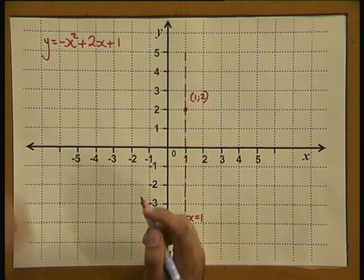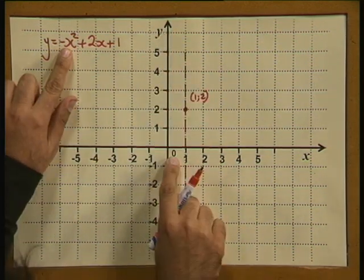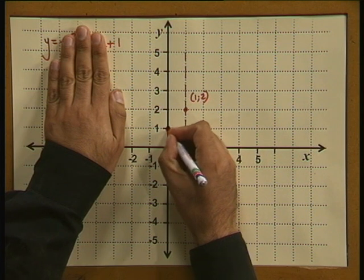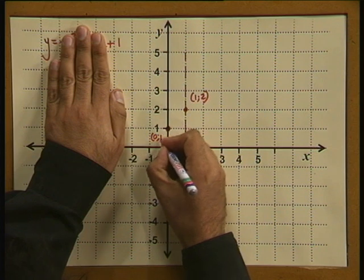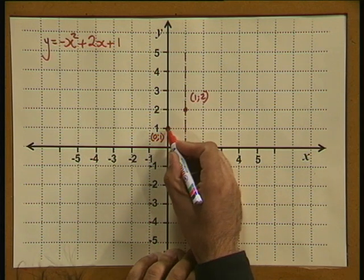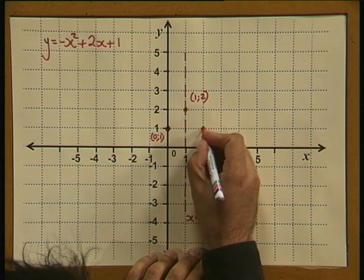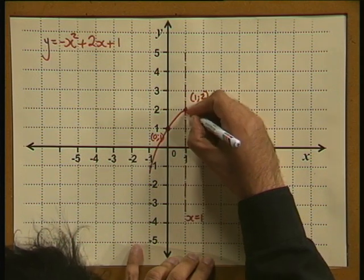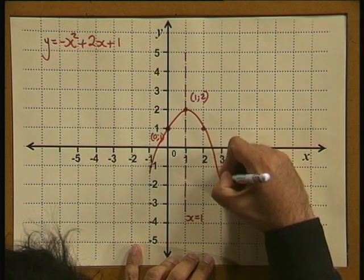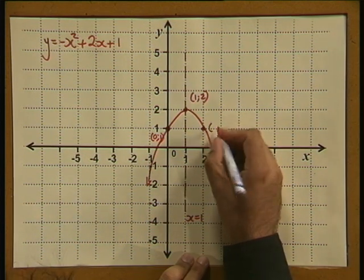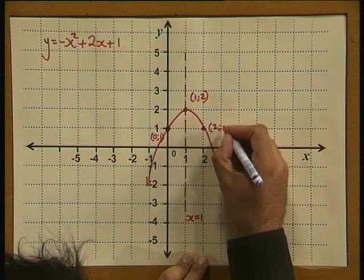Now we need the y-intercept. When x is 0, substituting into the equation gives y equal to 1, so the y-intercept is at (0, 1). Using the line of symmetry, one unit on each side of the line of symmetry generates a mirrored point, and now we can draw our parabola. It is an upside-down parabola with a maximum value. The mirrored point has coordinates (2, 1).